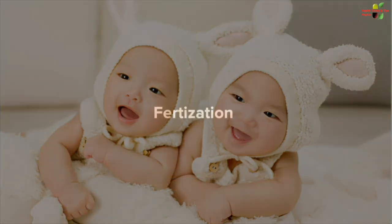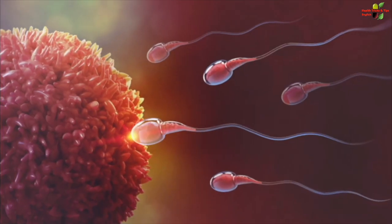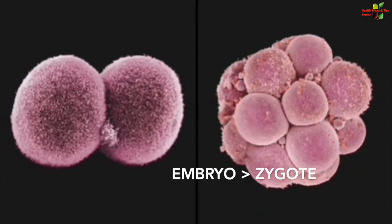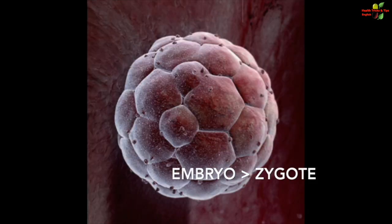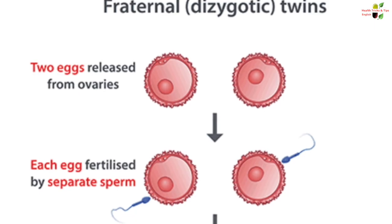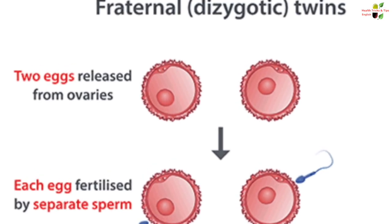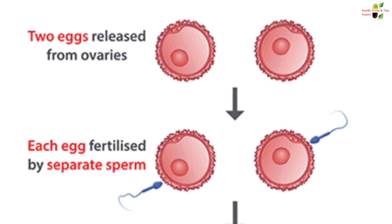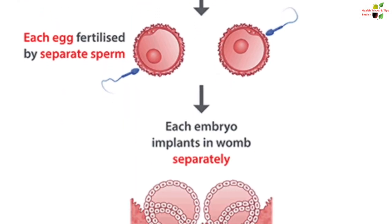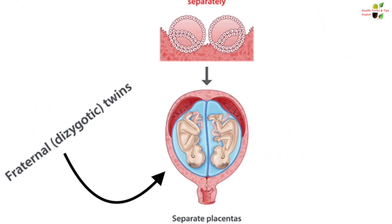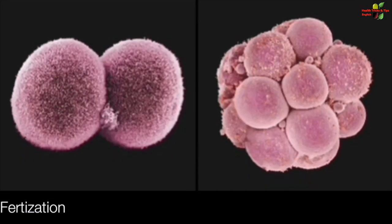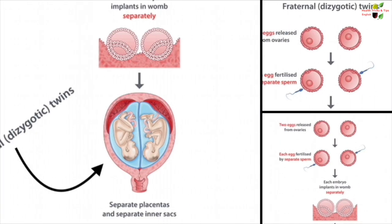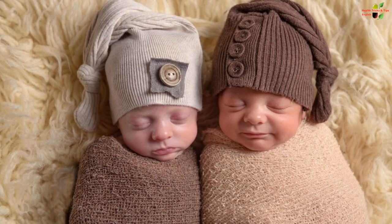So let's talk about the fraternal twins first. When the egg from the female is fertilized by the sperm, the fertilized egg is known as a zygote. But sometimes what happens is that the female releases two eggs and these two separate eggs are fertilized by two separate sperm. So here there is a formation of two zygotes, and so the dizygotic twins form in the womb. As the formation of these two zygotes are from two different sperms and two different ovum, here we get two non-identical twins.